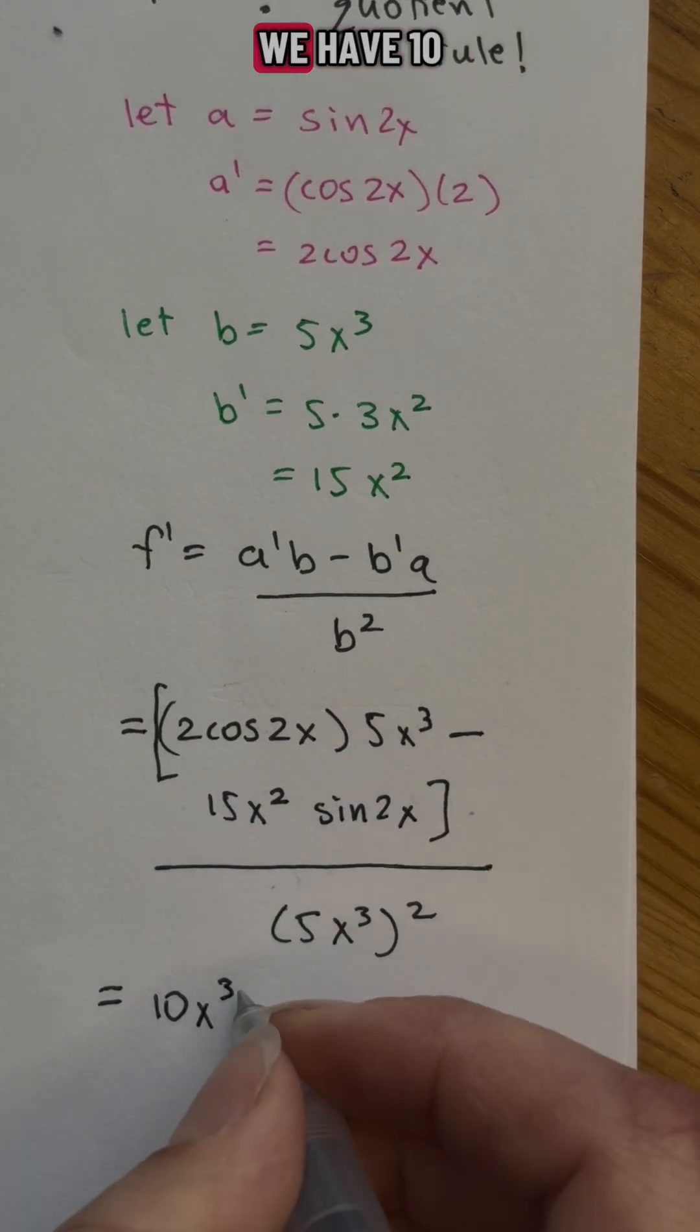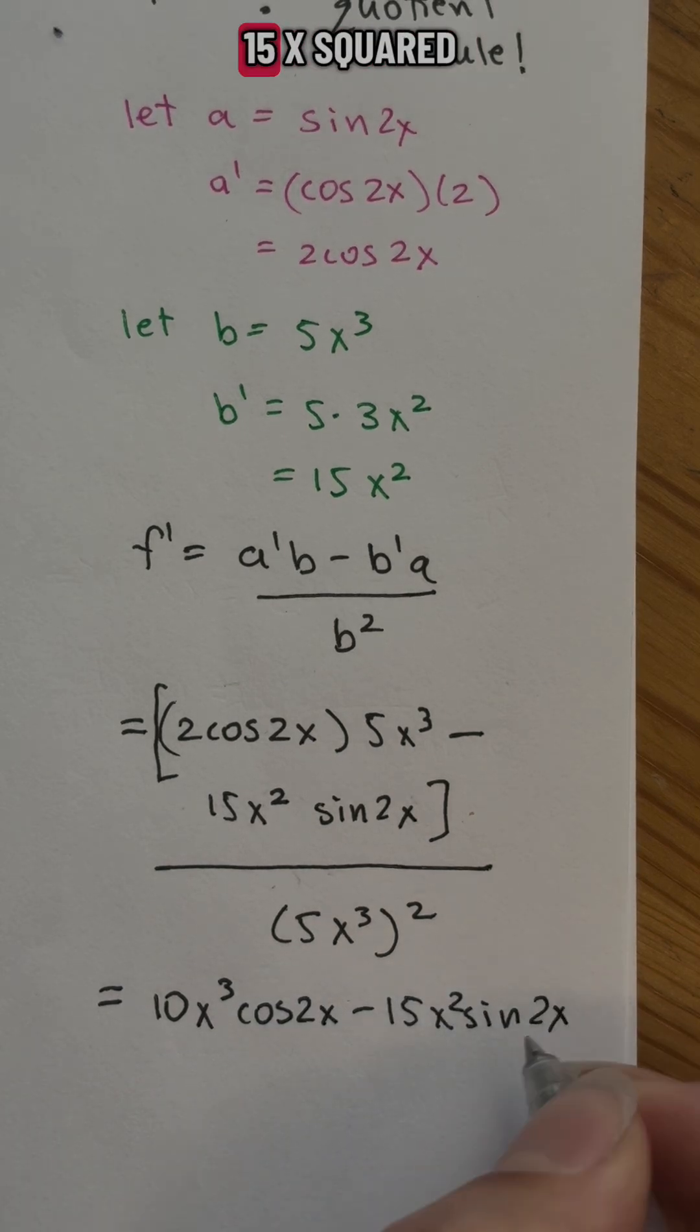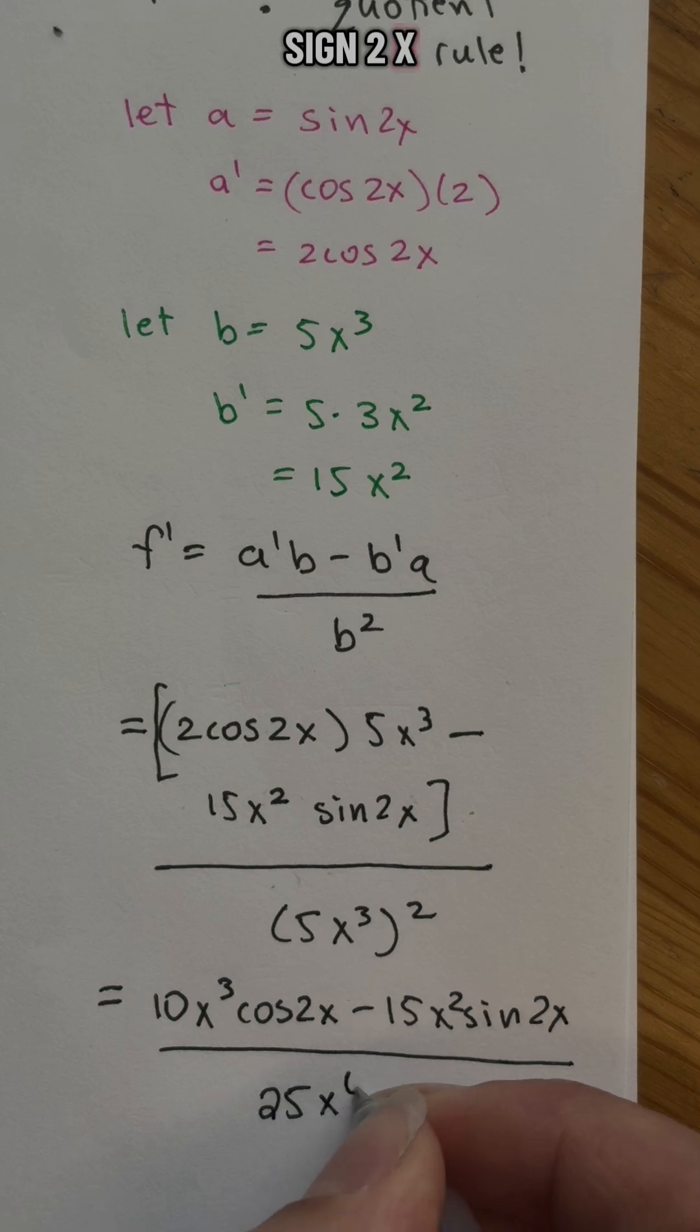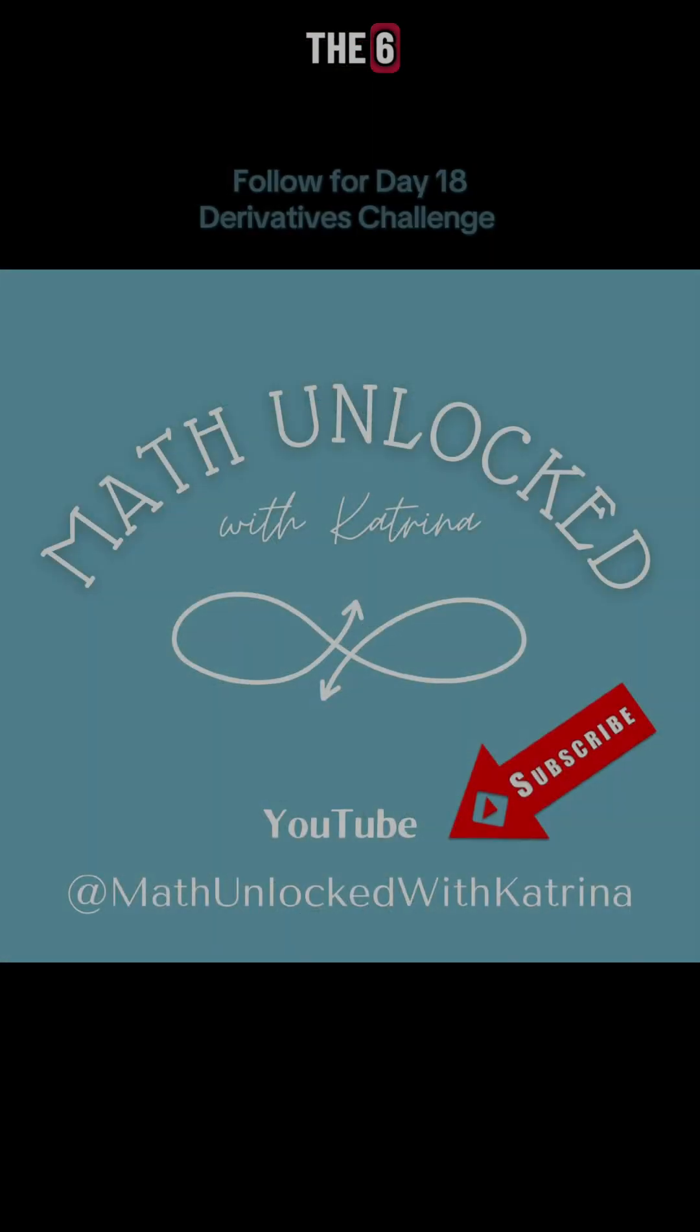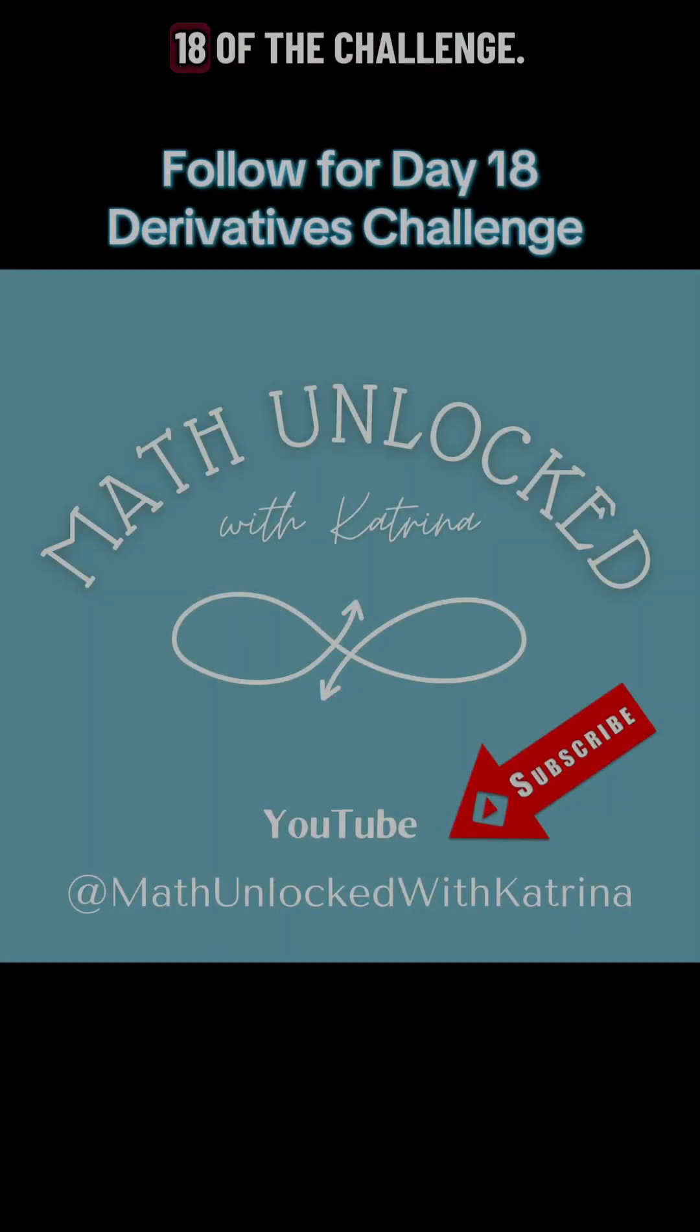if we simplify, we have 10x cubed cos 2x minus 15x squared sine 2x over 25x to the 6. Be sure to follow for day 18 of the challenge.